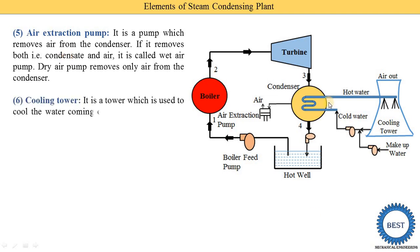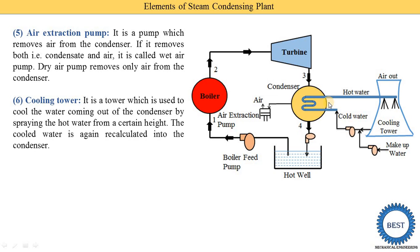The next component is the cooling tower. It is a tower used to cool the hot water coming out from the condenser by spraying the hot water from a certain height. The hot water is cooled by air supplied from the bottom sides of the cooling tower. Air absorbs the heat energy from the water and exits from the upper part. The cool water is again circulated into the condenser.